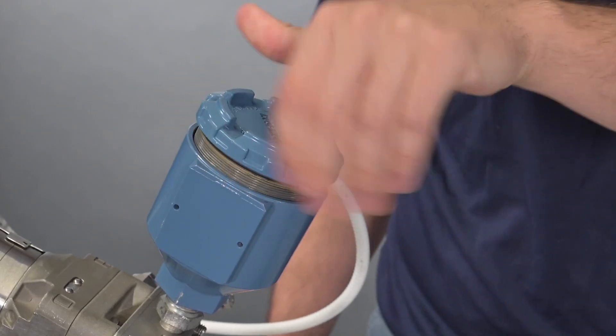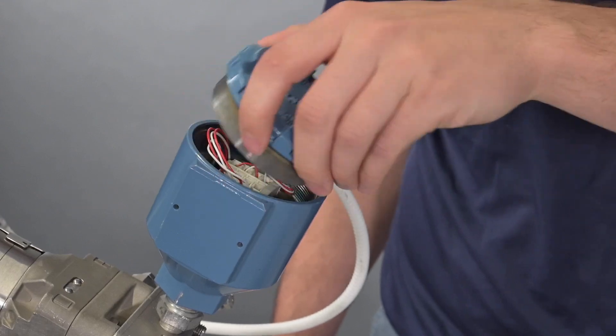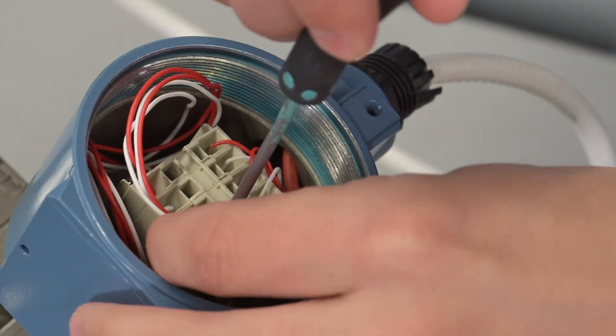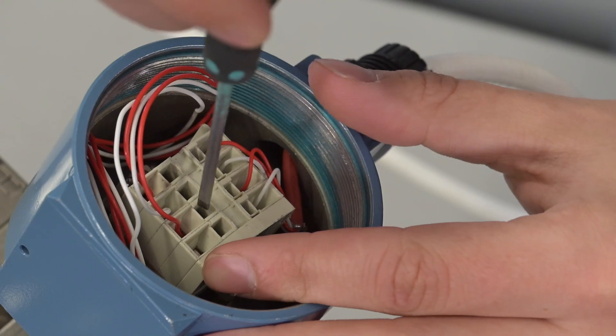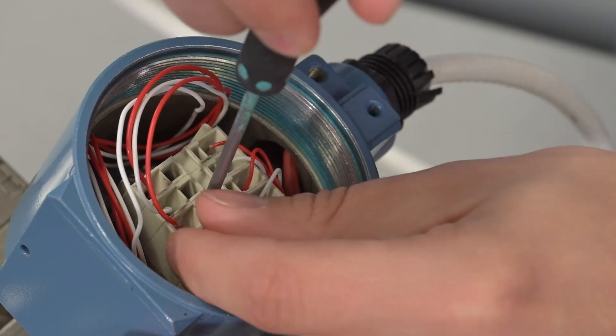Remove the cap from the temperature housing to access the RTD wiring. Remove the wiring from the terminal block. Make sure to not remove the wires to the SMB transmitter.